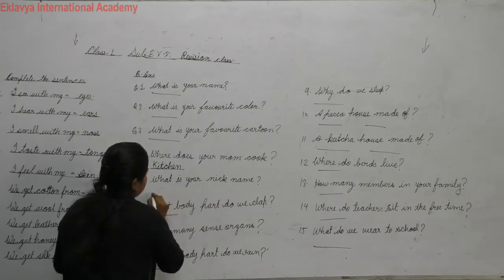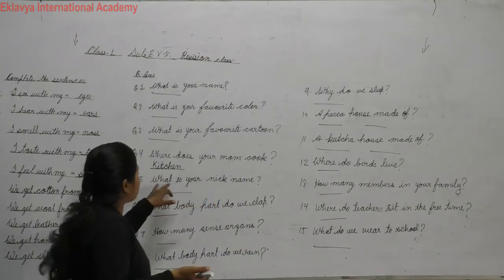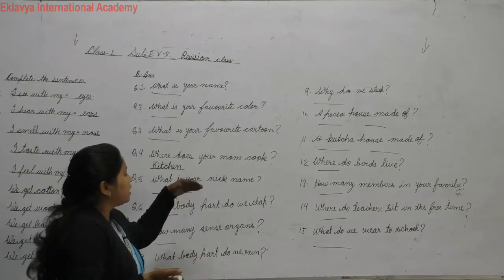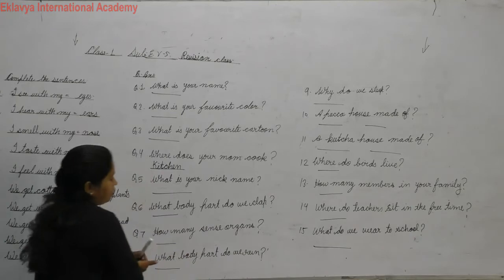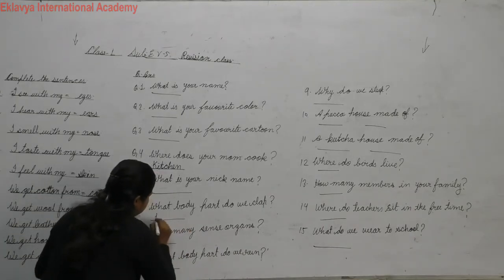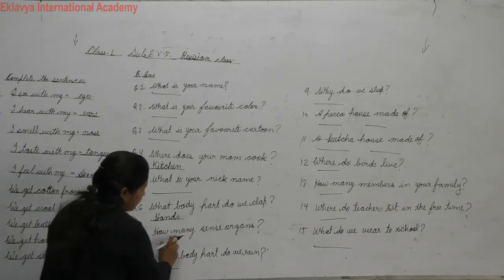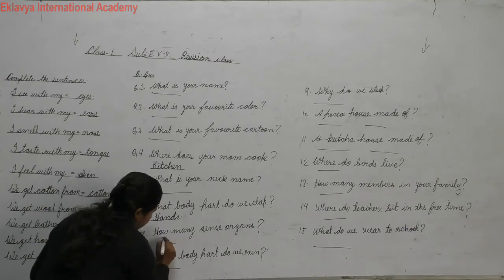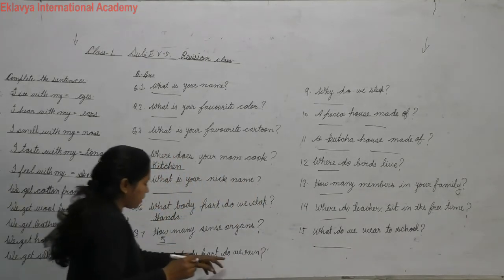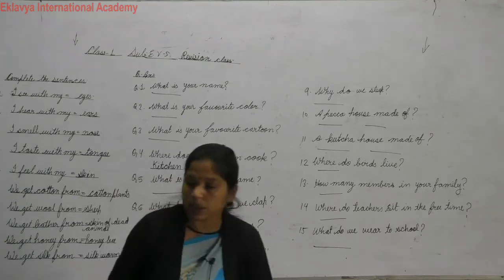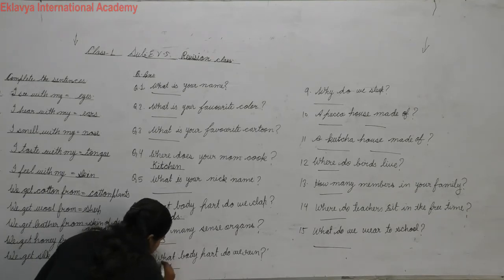What is your nickname? Nickname is what your parents call you lovingly at home — like Golu, Chintu, or Pintu. Write your nickname. What body parts do we clap with? Hands — I clap with hands. How many sense organs? Five — eyes, nose, ear, tongue, and skin. What body parts do we run with? Legs — I run with legs.